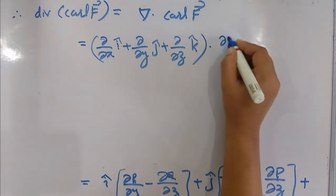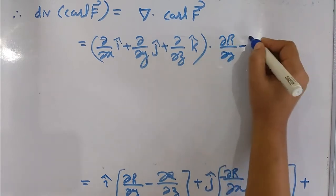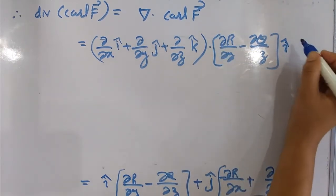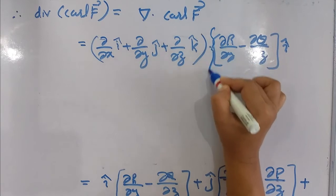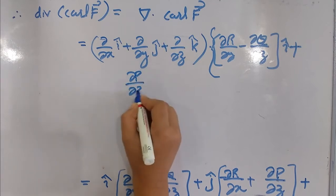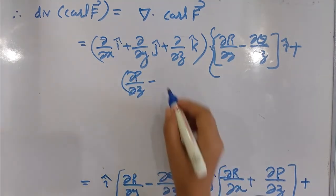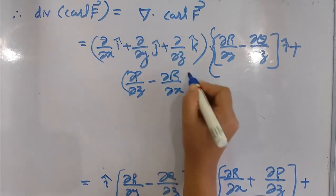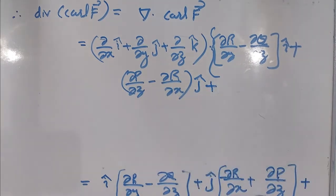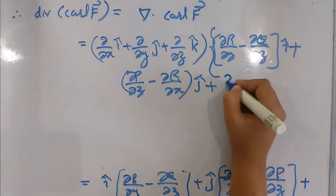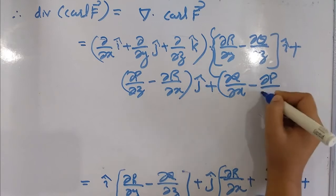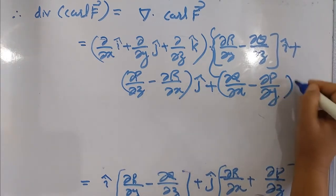Taking the dot product, we write the components: (∂R/∂y − ∂Q/∂z) i, plus (∂P/∂z − ∂R/∂x) j, plus (∂Q/∂x − ∂P/∂y) k.